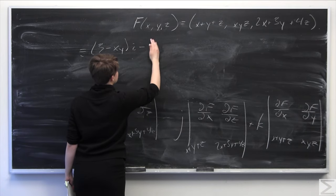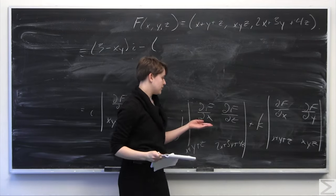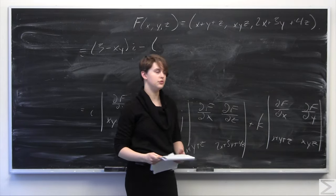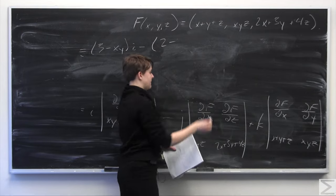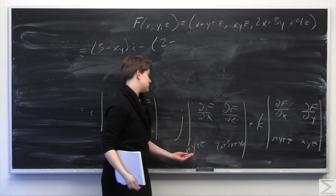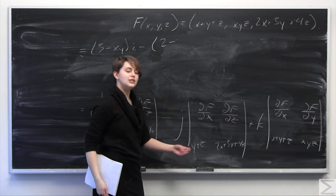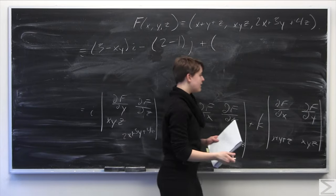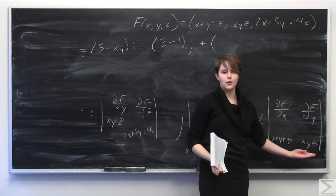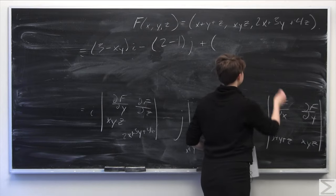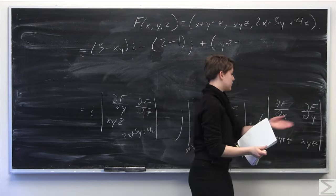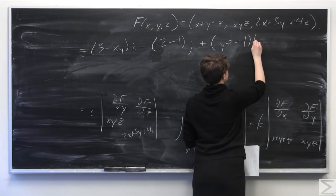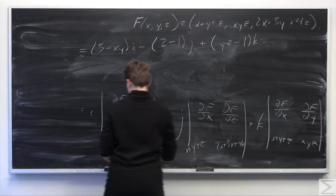So we get minus (2 minus 1), which is minus 1, for the j component. Moving to the k component: the partial of xyz with respect to x is yz, minus the partial of x plus y plus z with respect to y which is 1. So the k component is (yz minus 1). We can now simplify.